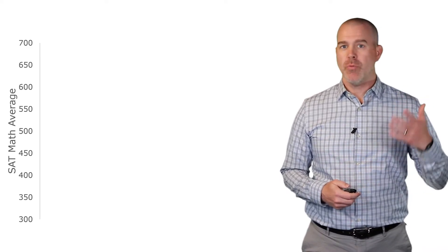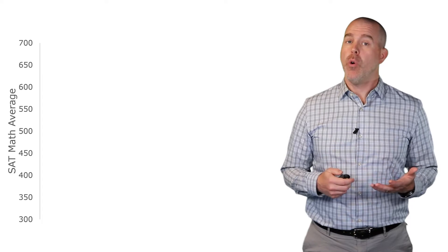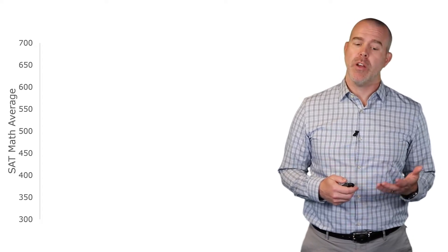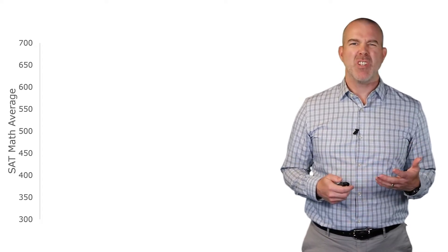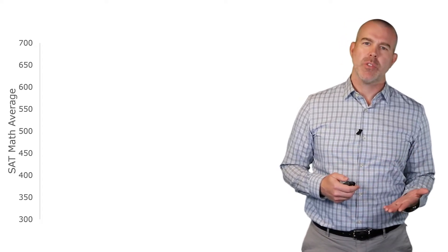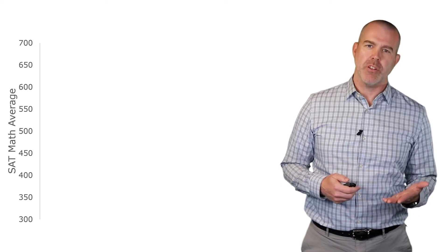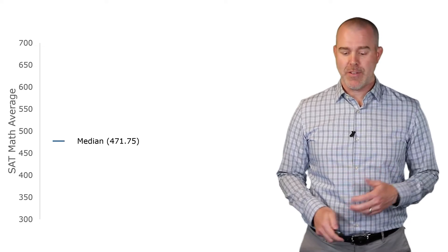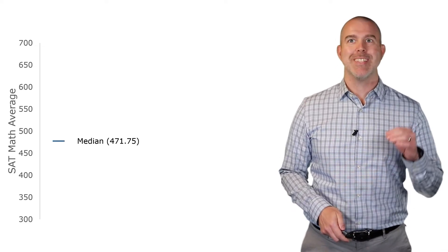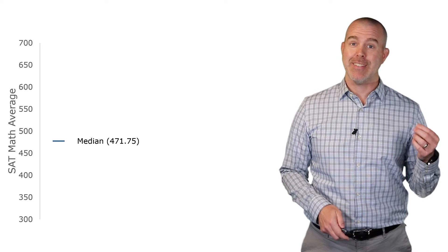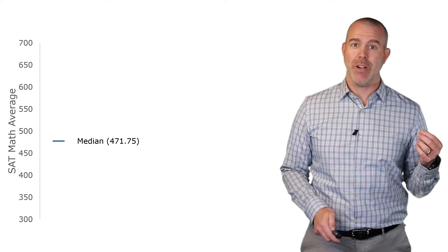The scores on the SAT math range from 200 to 800, but the averages are not — no school is going to average 200 or average 800. The median of all of these schools is 471.75, so that's the median average SAT math score.